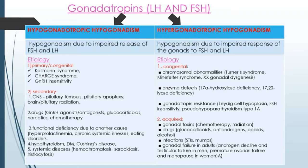Functional causes include hyperprolactinemia, chronic systemic illness, and eating disorders. Endocrine diseases include hypothyroidism, diabetes mellitus, and Cushing's disease. Systemic disease causes include hemochromatosis, sarcoidosis, and histiocytosis.